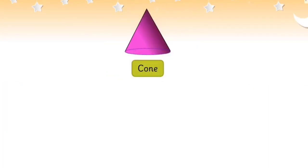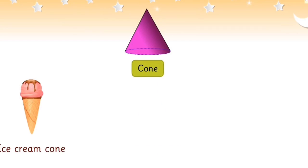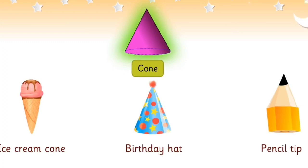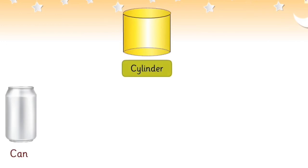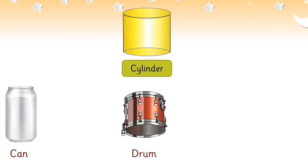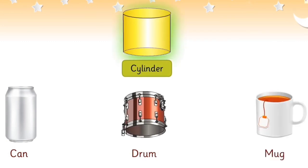This is a cone. An ice cream cone, a birthday hat, and a pencil tip are all examples of a cone. This is a cylinder. A can, a drum, and a mug are all examples of a cylinder.